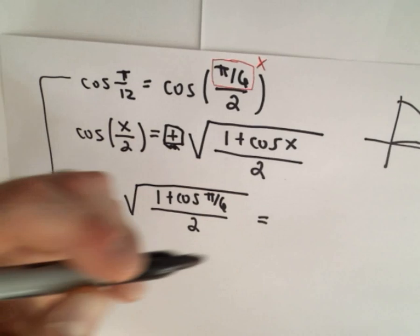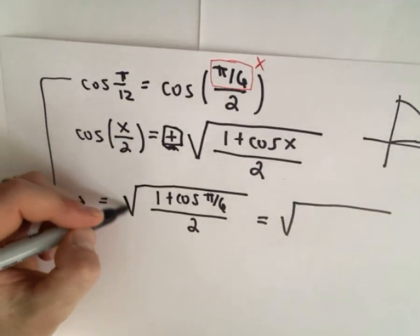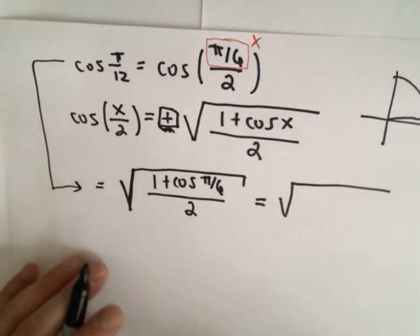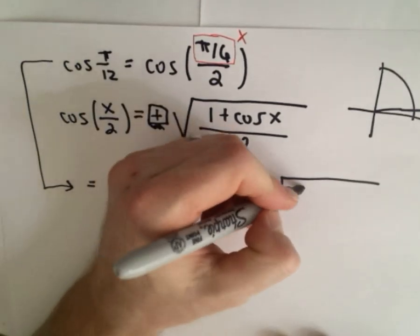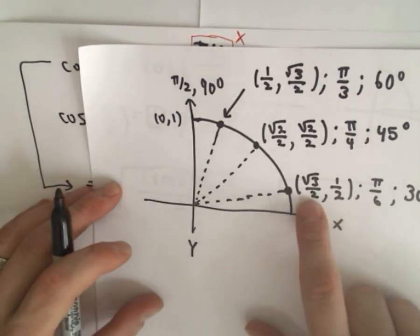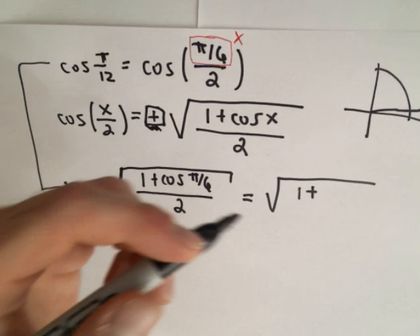Okay, so now it's just a matter of simplifying this a little bit. Again, the two is underneath the radical as well. I want to emphasize that in case it looks like it's not. So we've got one plus, well, let's see. I find pi over six. Cosine has to do with the x-coordinate. That'll be root three over two.